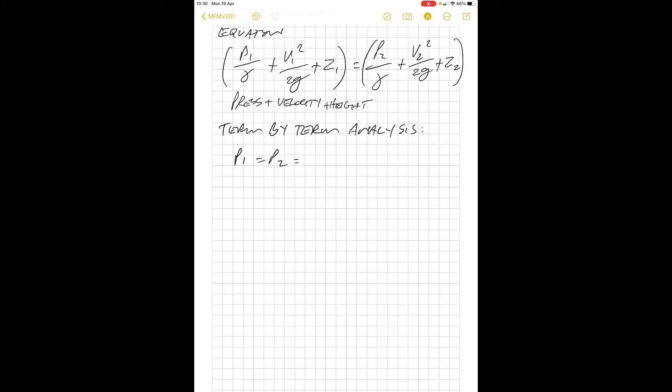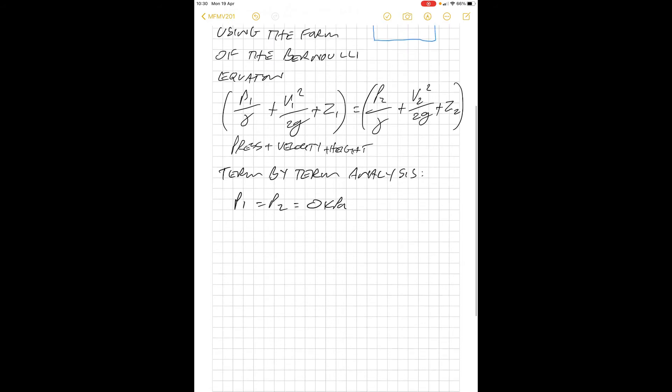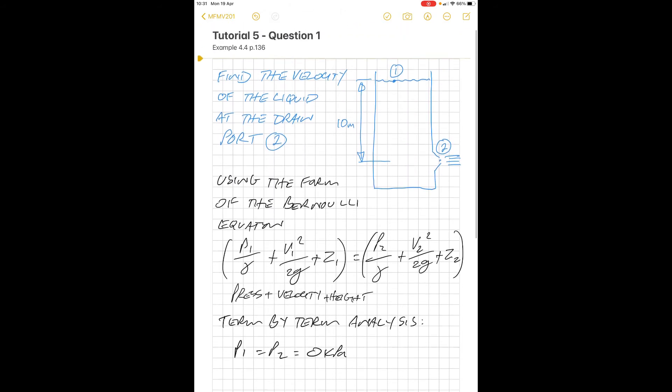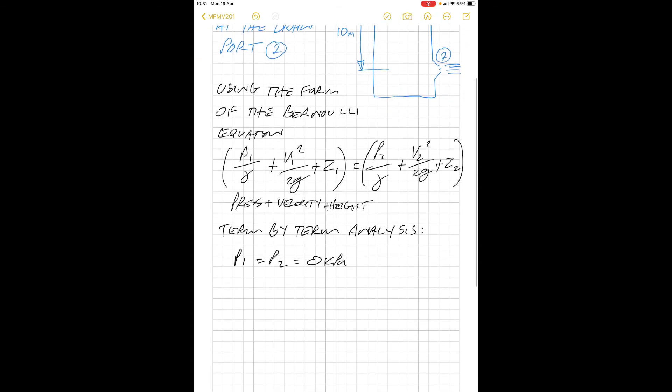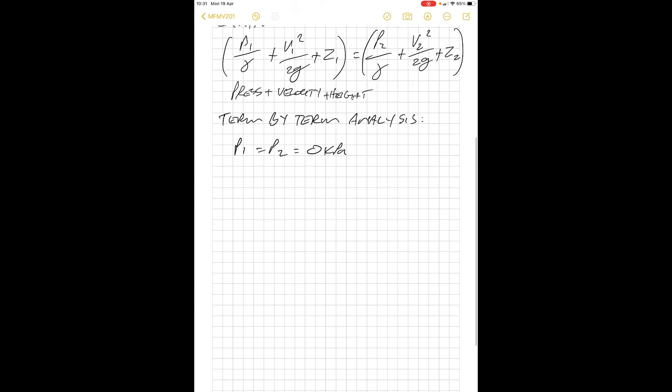p1 equals p2 equals zero kilopascal. What do we mean by that? We're assuming atmospheric pressure is constant at point one and point two, and we're calculating this problem using gauge pressure. Therefore that pressure would be the same and we can assume it to be zero. We're using atmospheric pressure as our reference.